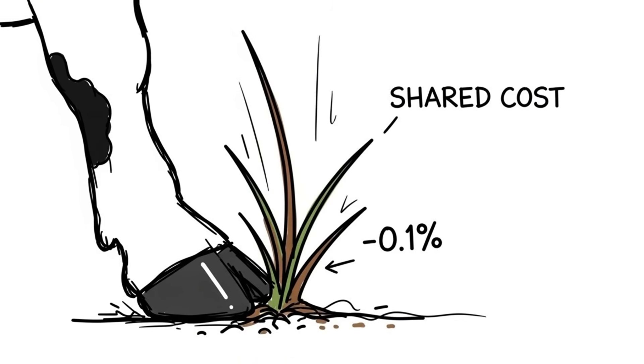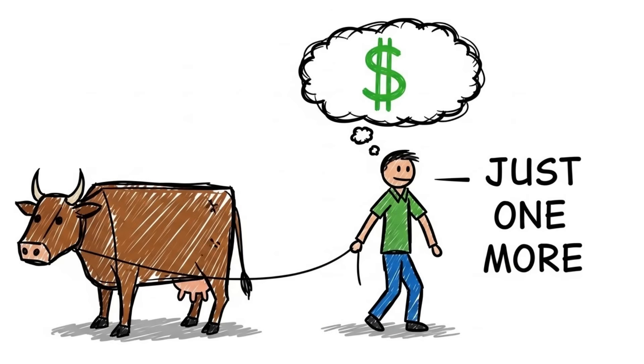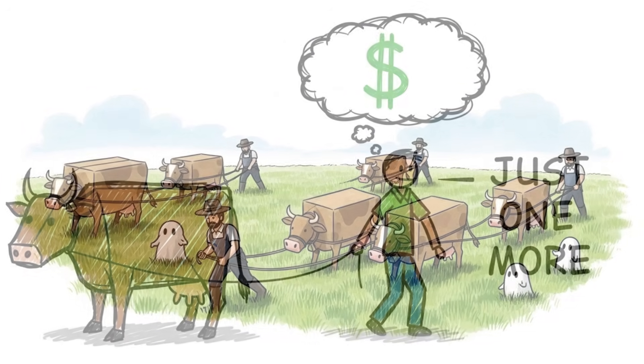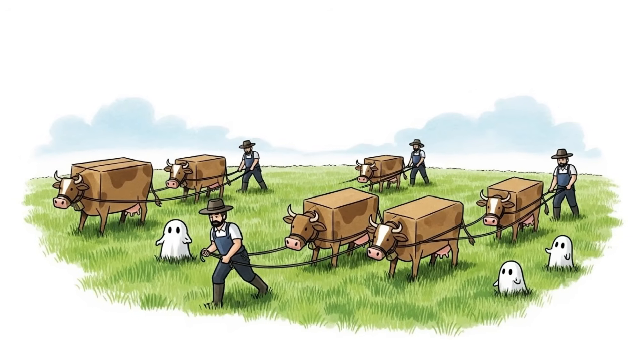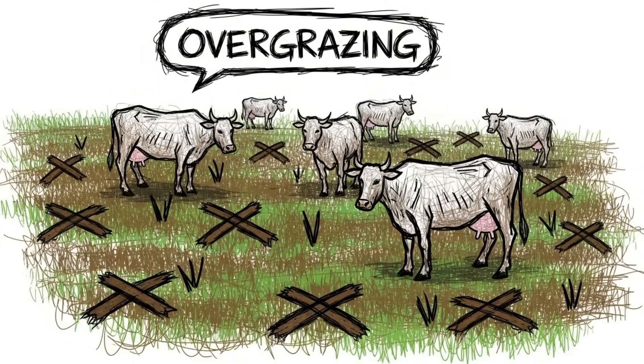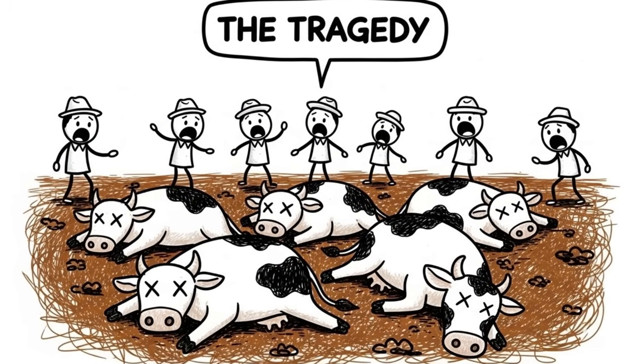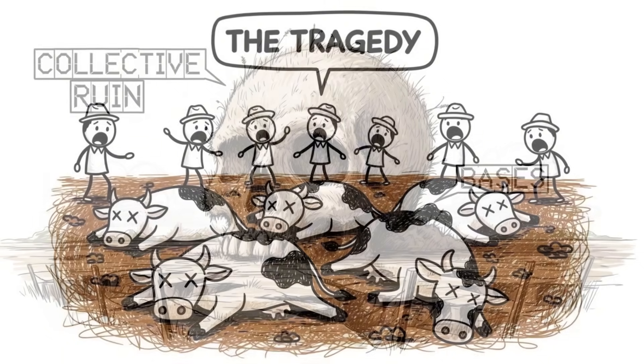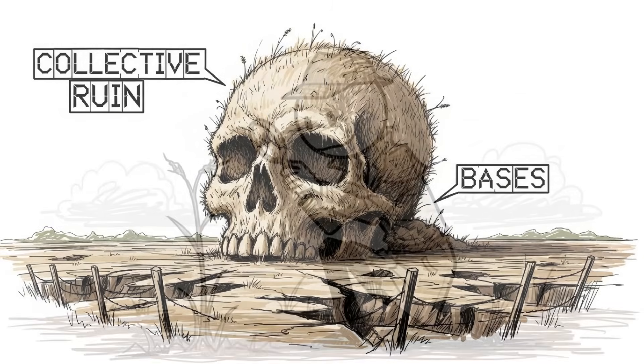The problem is, every single herdsman comes to this same rational conclusion. They all add just one more cow. The grass disappears, the soil erodes, the pasture dies, and suddenly, everyone's cows starve. This is the tragedy of the commons, and it is the single most terrifying law of game theory because it governs our planet's survival.